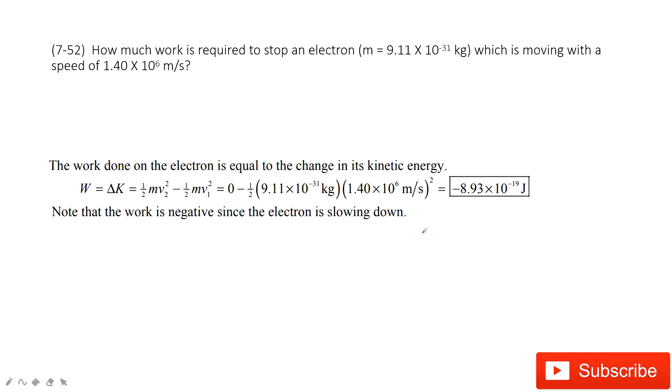So the work required by the person or by something else acting on this electron is 8.93 × 10⁻¹⁹ joules.